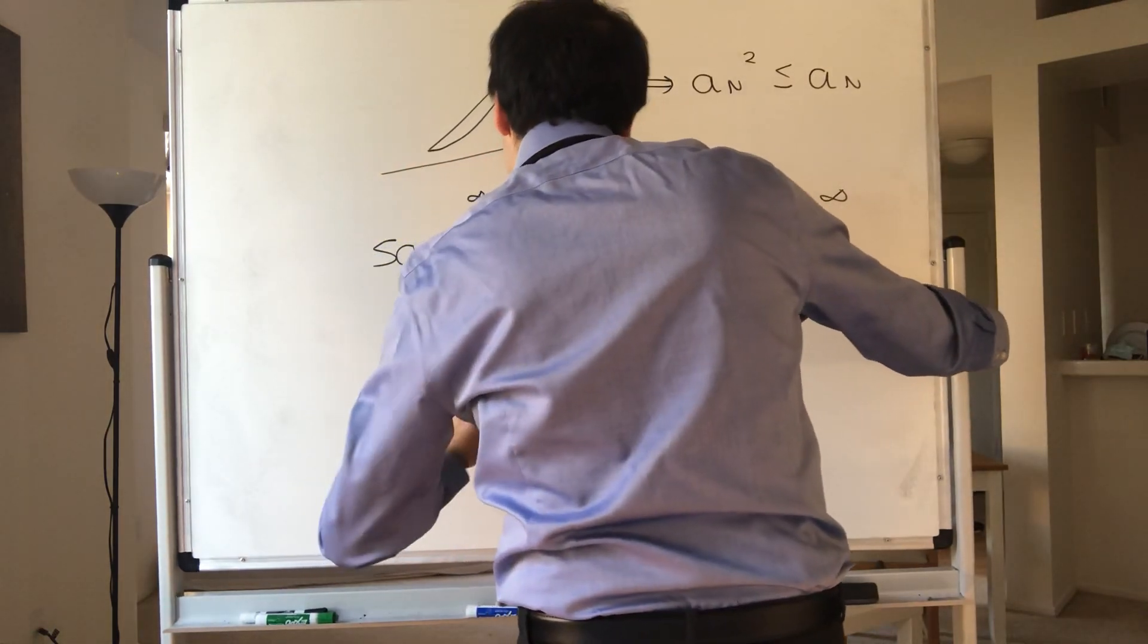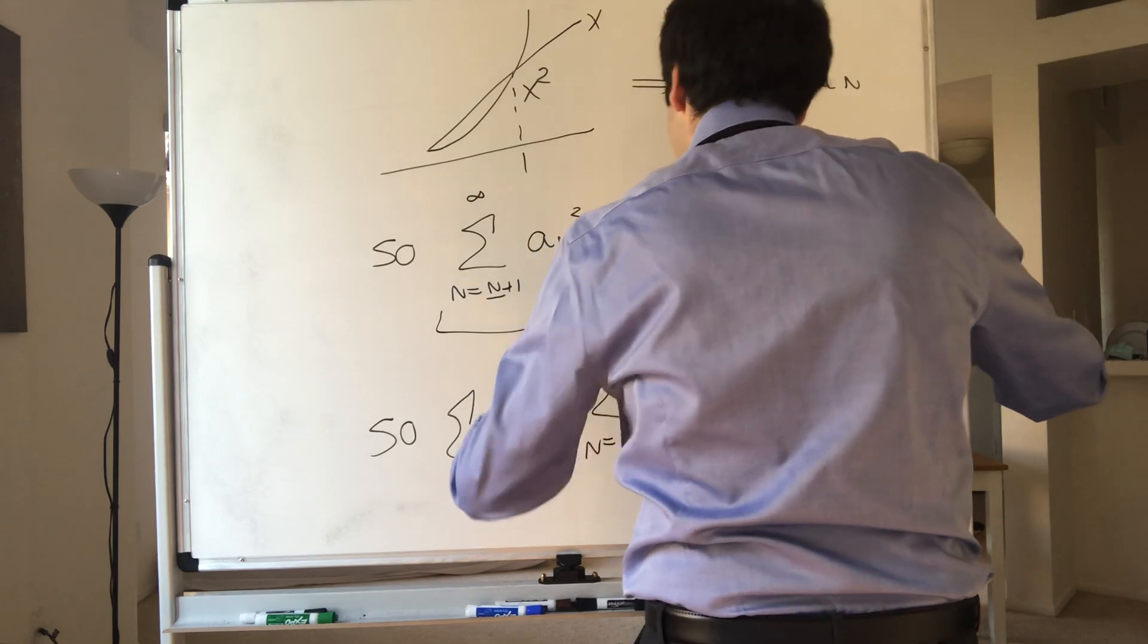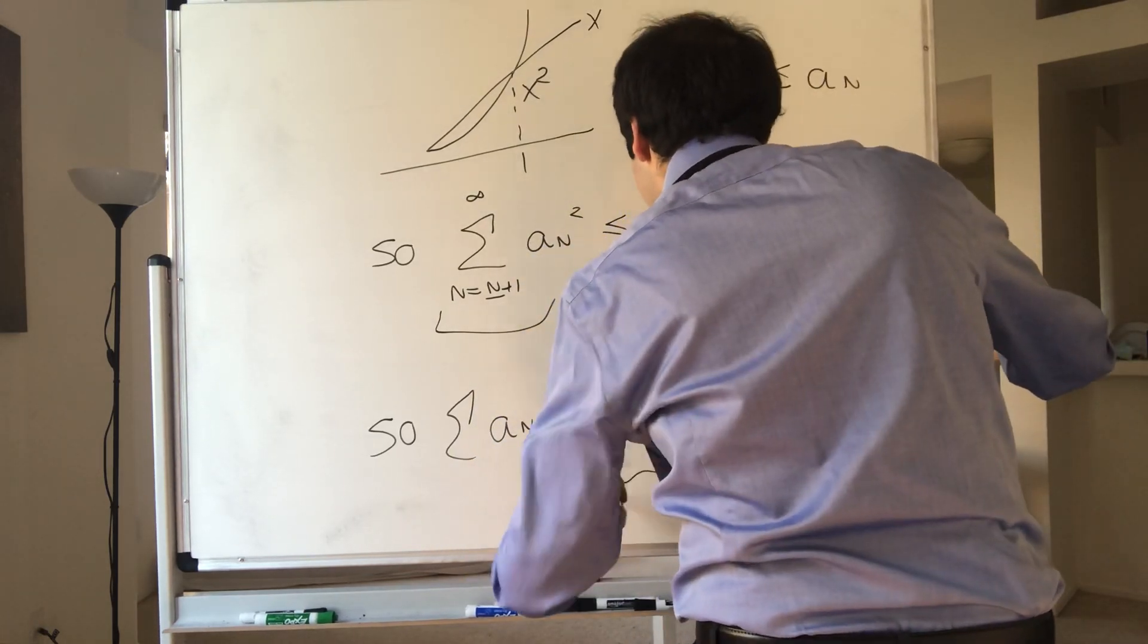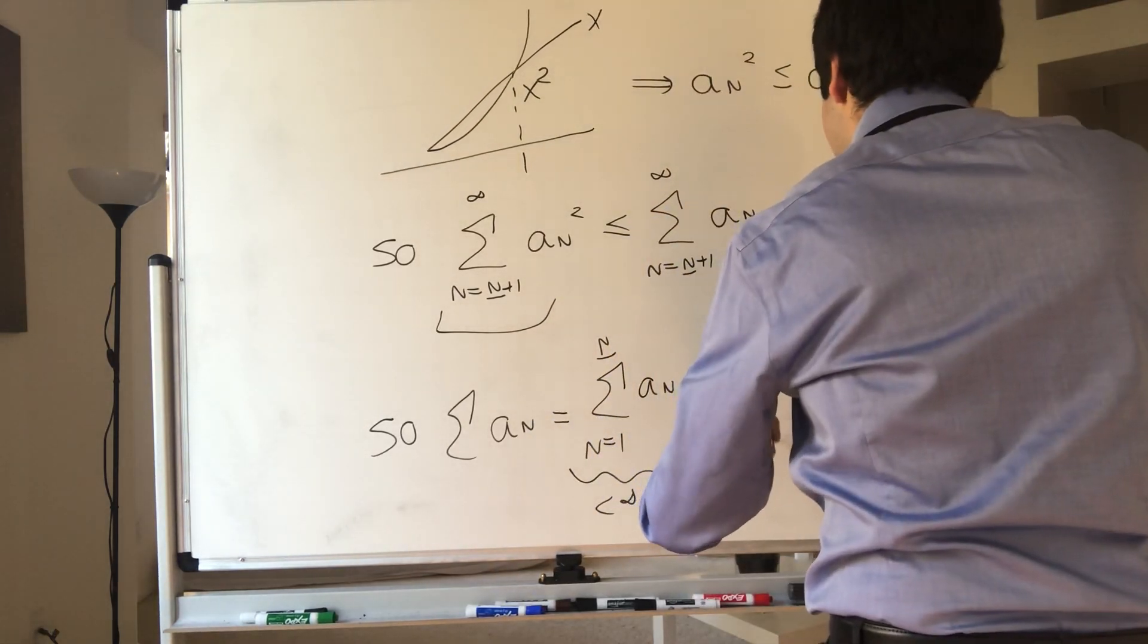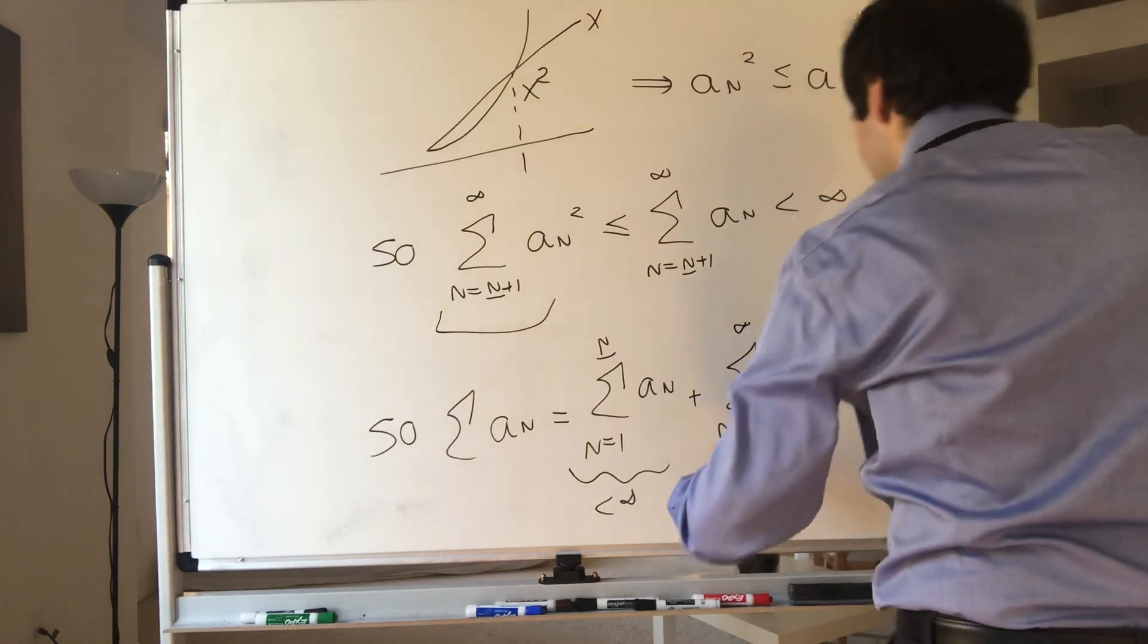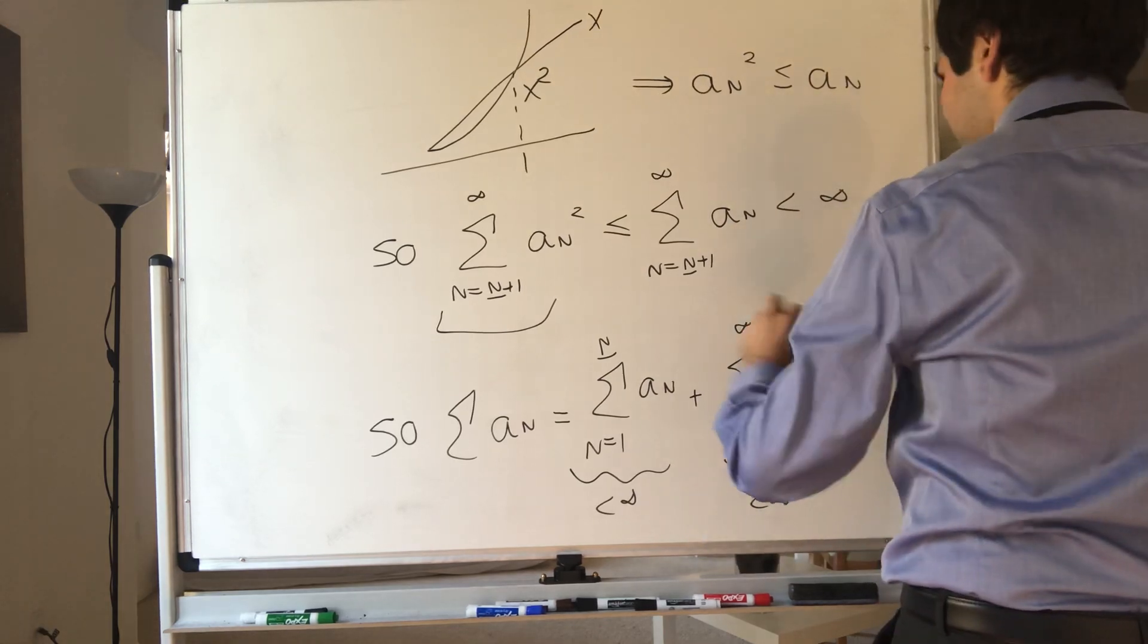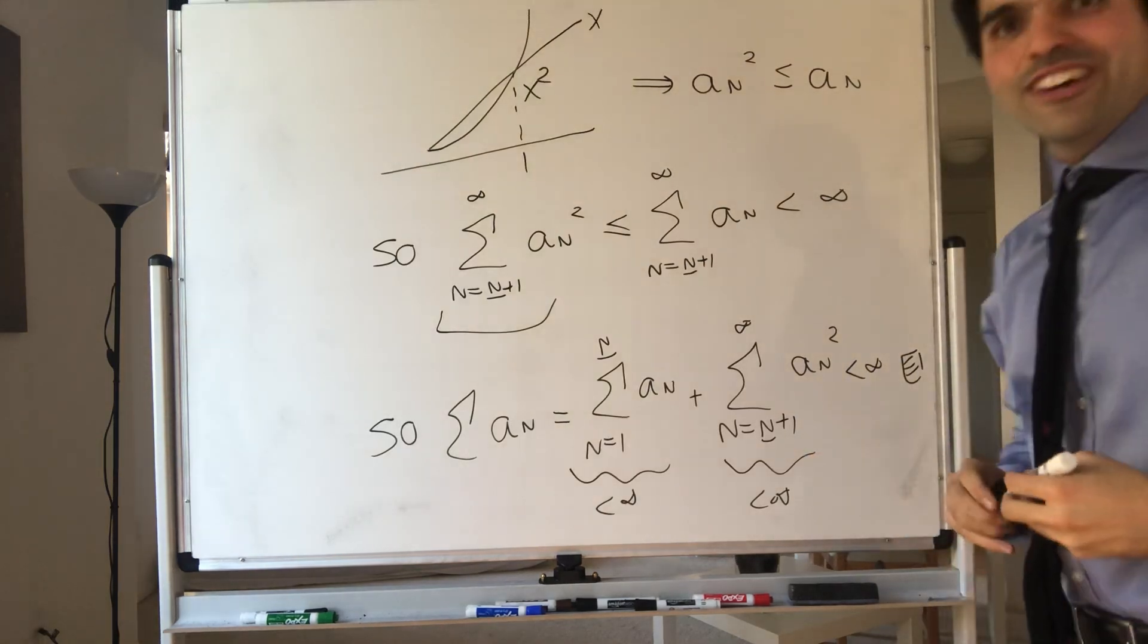So the sum of aₙ squared, which is the sum from n equals one to capital N of aₙ squared, this thing is finite, plus the sum from n equals capital N plus one to infinity of aₙ squared. This is also finite. This whole thing is finite, and therefore we're done.